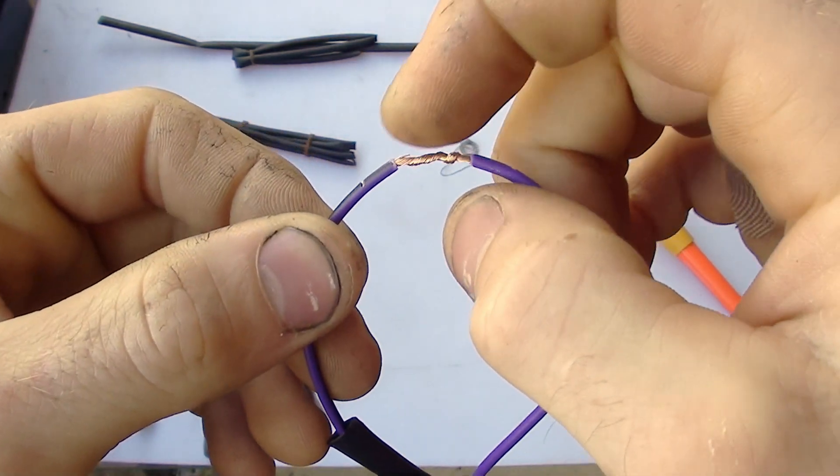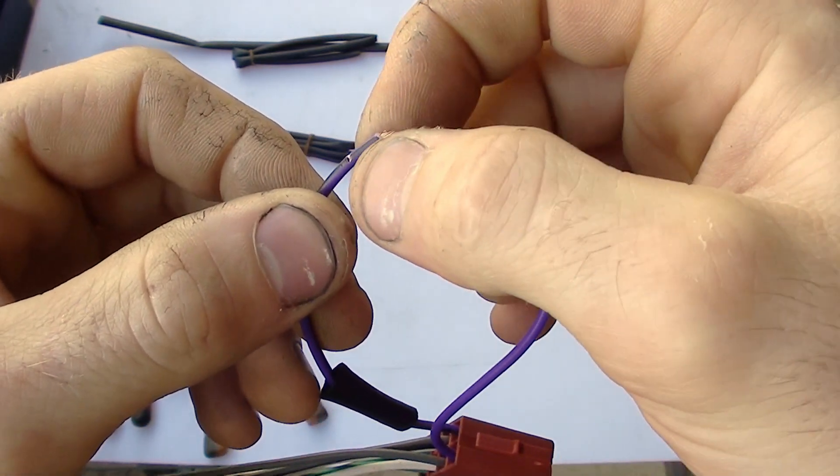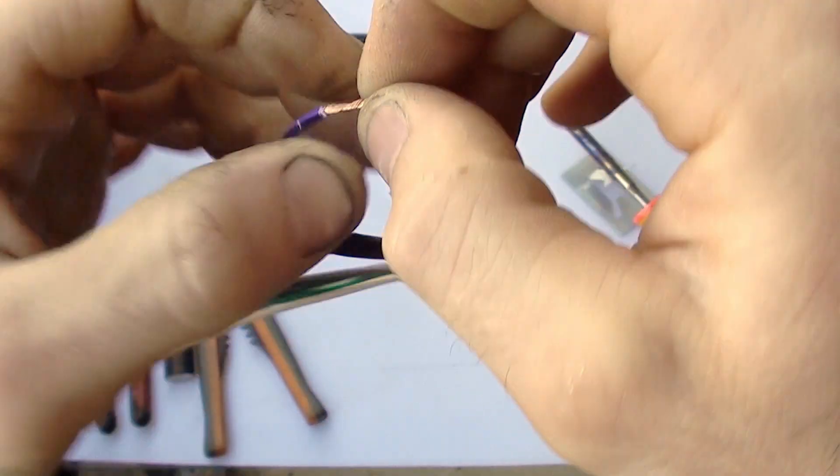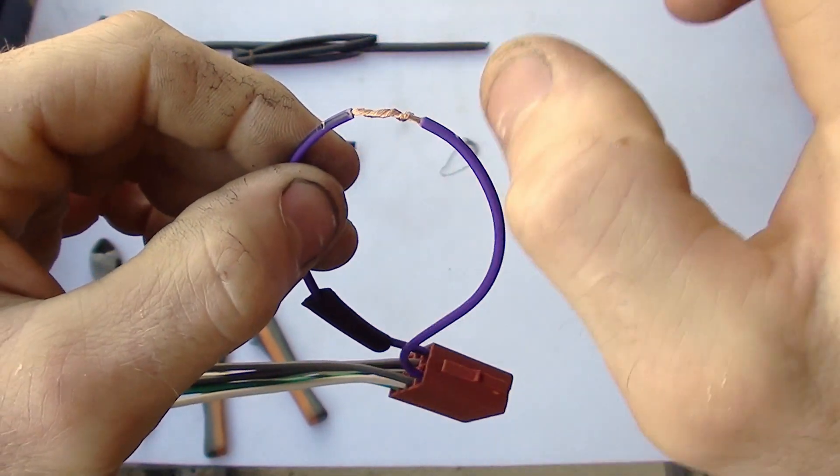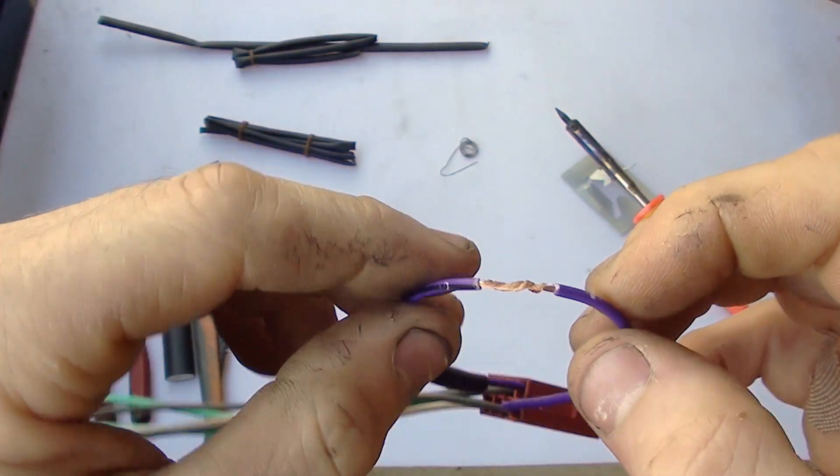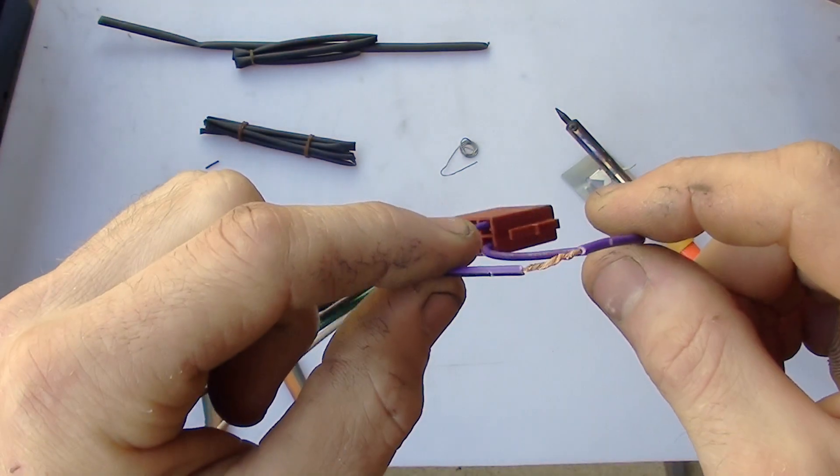So basically you just don't want any sharp edges sticking out or sharp wires sticking through. Otherwise you get more of a possibility of that poking through the heat shrink and then causing a short circuit. Now it's time to solder those two together.